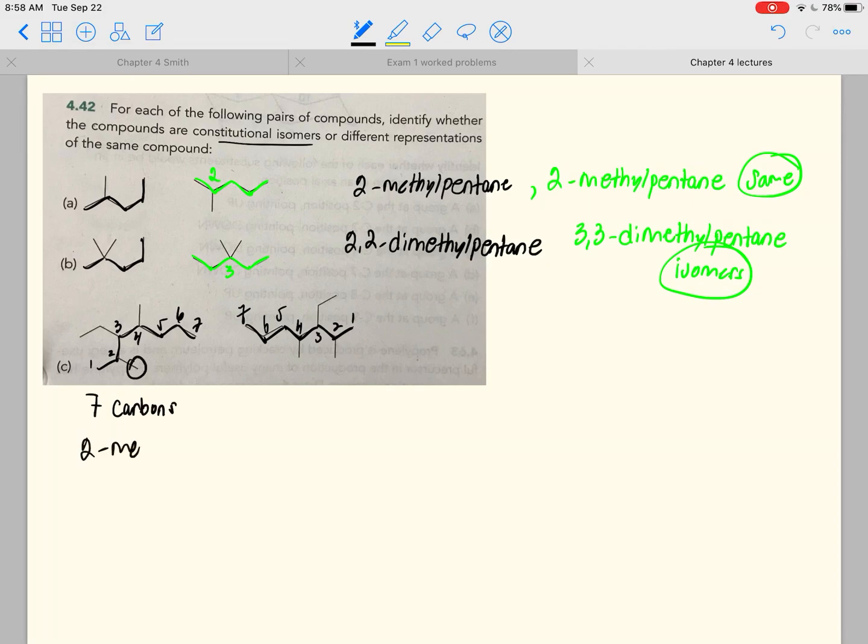So there's a methyl group at carbon 2. There's a methyl group over here at carbon 2. Okay, there's an ethyl group at carbon 3. And there's an ethyl group at carbon 3.